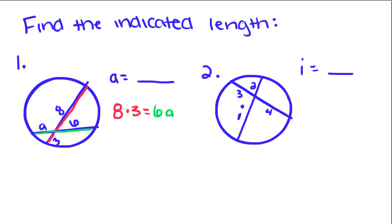8 times 3 is 24 equals 6a. To solve for a, we're going to divide both sides by 6, and if you do that, you get a is equal to 4.